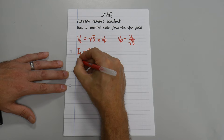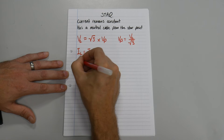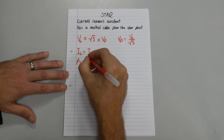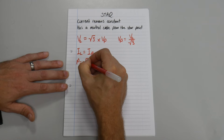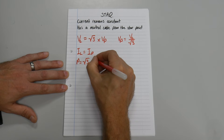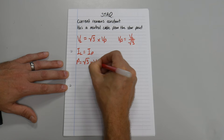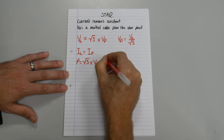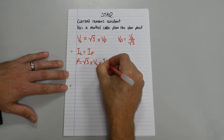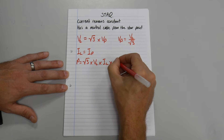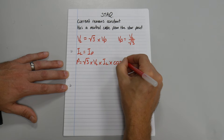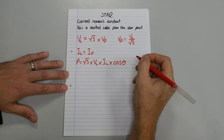And the last formula: P equals square root of 3 times VL times IL times cosine of the angle.